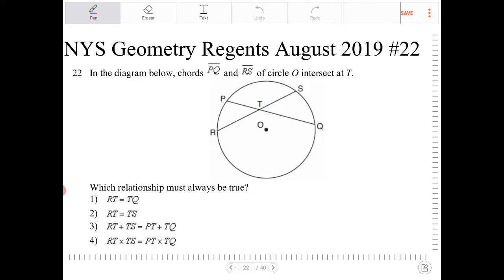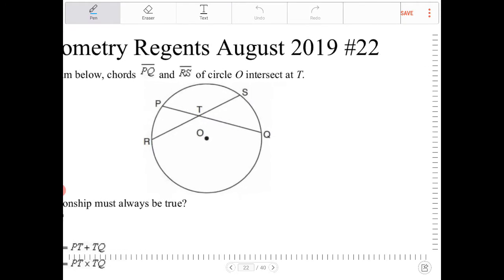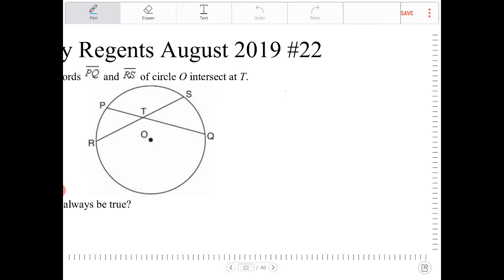So whenever you have intersecting chords, a couple of things happen. And really this question is asking whether or not you remember the circle theorems.